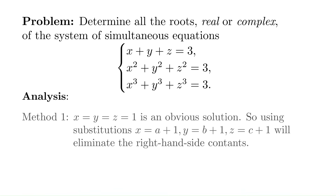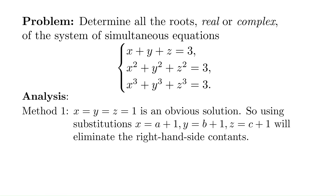First, we can easily see x equals y equals z equals 1 is an obvious solution. So we can use the transform x equals a plus 1, y equals b plus 1, and z equals c plus 1 to come up with a system of equations in a, b, and c, where a equals b equals c equals 0 is a solution of the new system. That way, the right-hand side of the equations will be zeros.